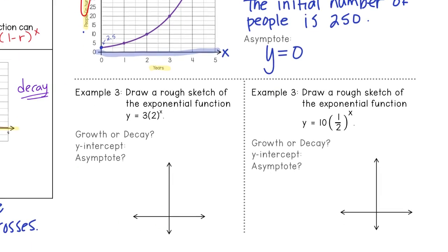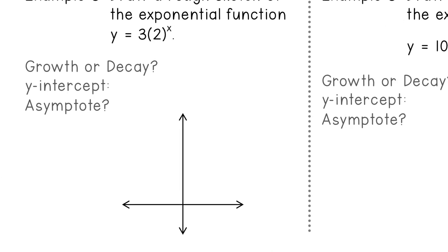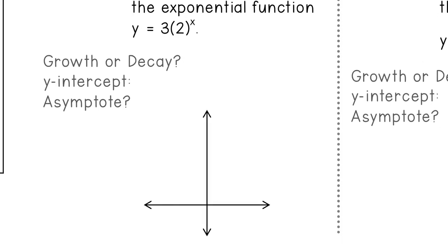Example three. It says draw a rough sketch of the exponential function y equals three, parentheses, two to the x power. So before I start drawing, I want to answer the three questions. Is it growth or decay? Where is the y-intercept? And where is the asymptote going to be? So I'm going to kind of go backwards because I know asymptote is super easy. It's always going to be at y equals zero.